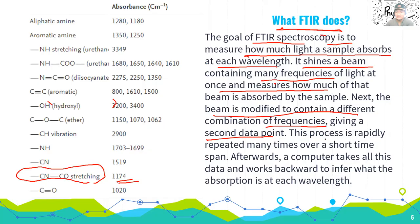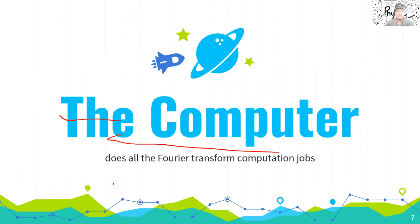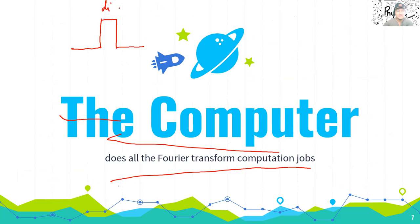This process is repeated many times, and then the computer handles the rest — you just place the sample into the equipment correctly and the computer does all the Fourier transform computation. The idea behind the Fourier transform is that discrete data can be expressed as an approximated continuous function. This converts the discrete point-by-point data into a continuous function.